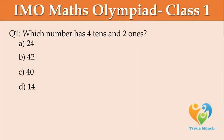Which number has 4 tens and 2 ones? A: 24, B: 42, C: 40, D: 14.